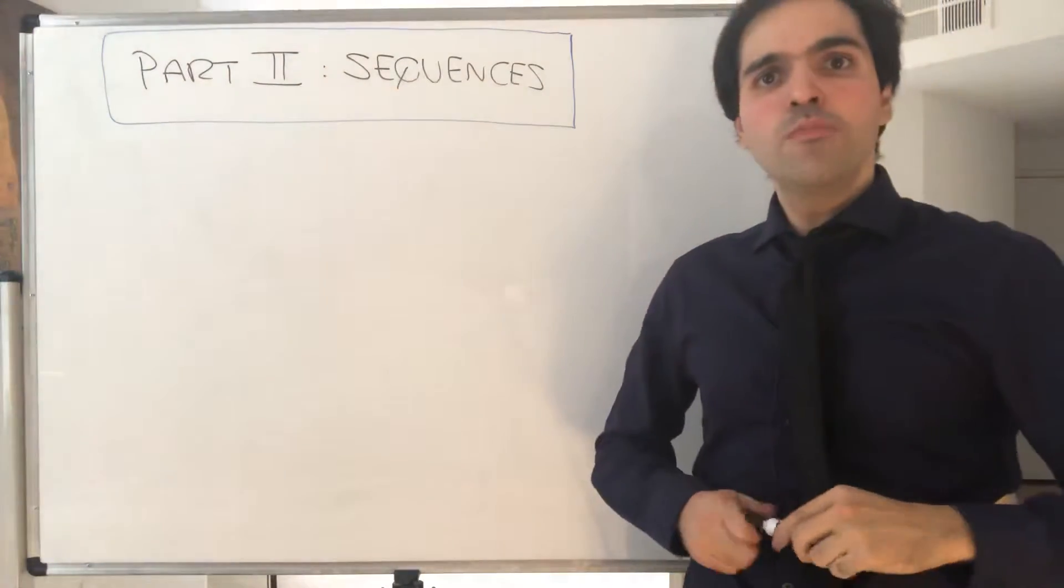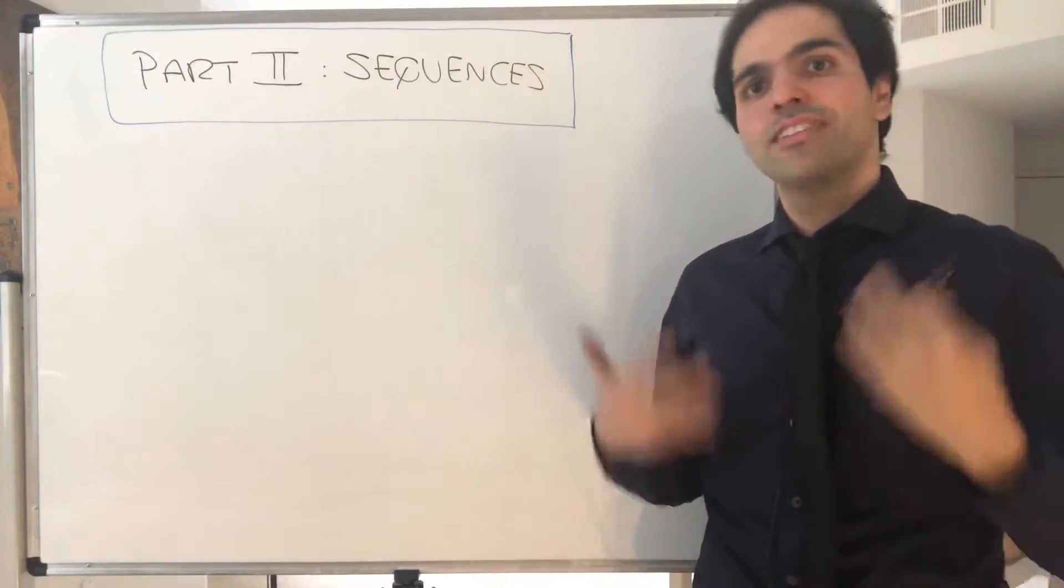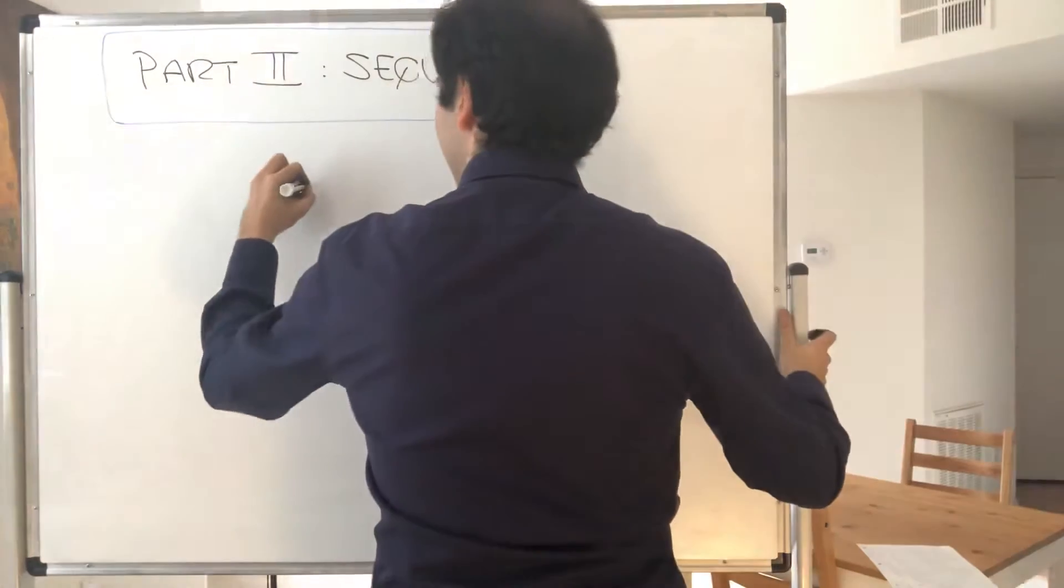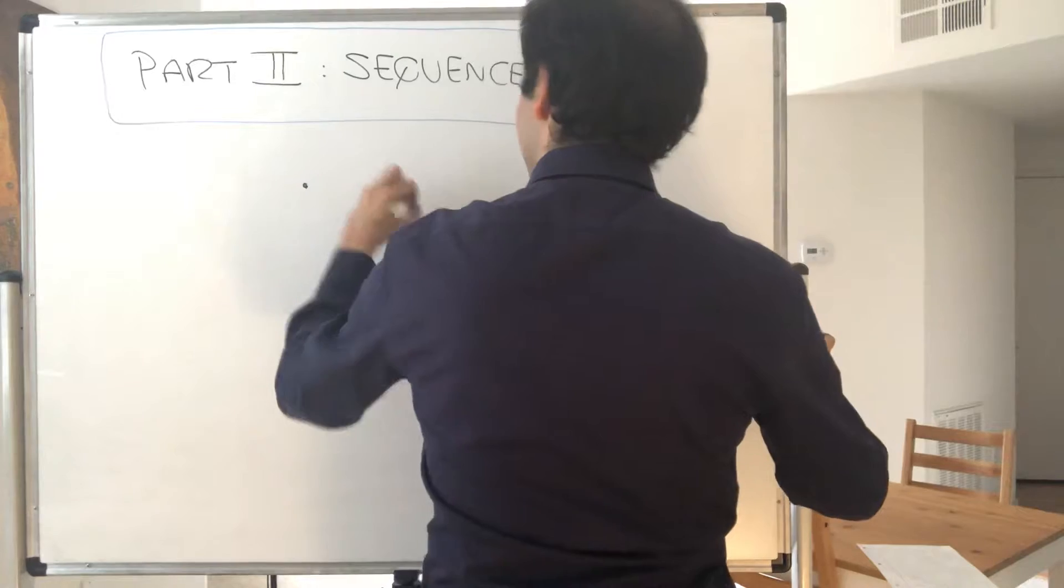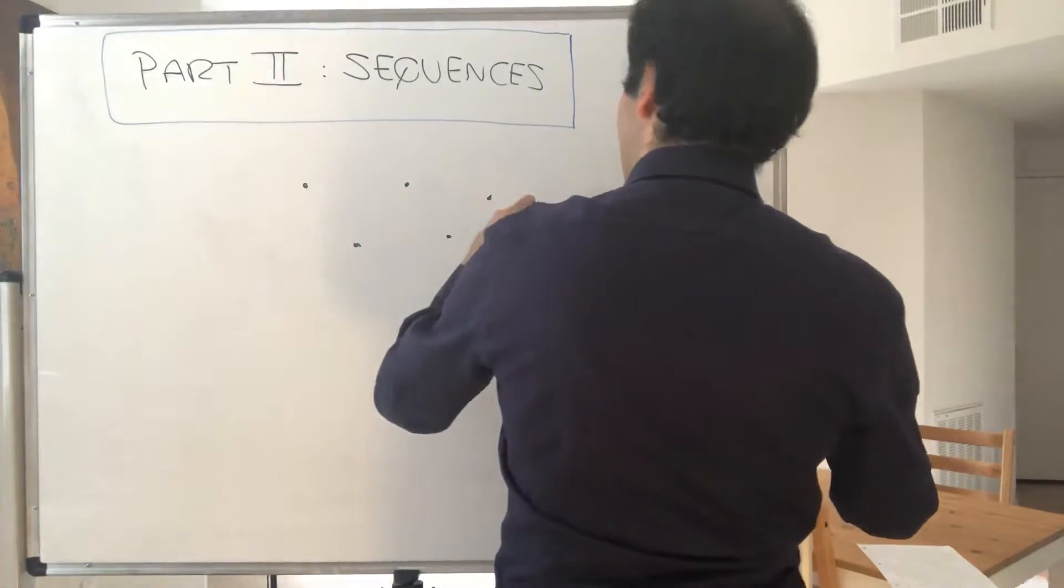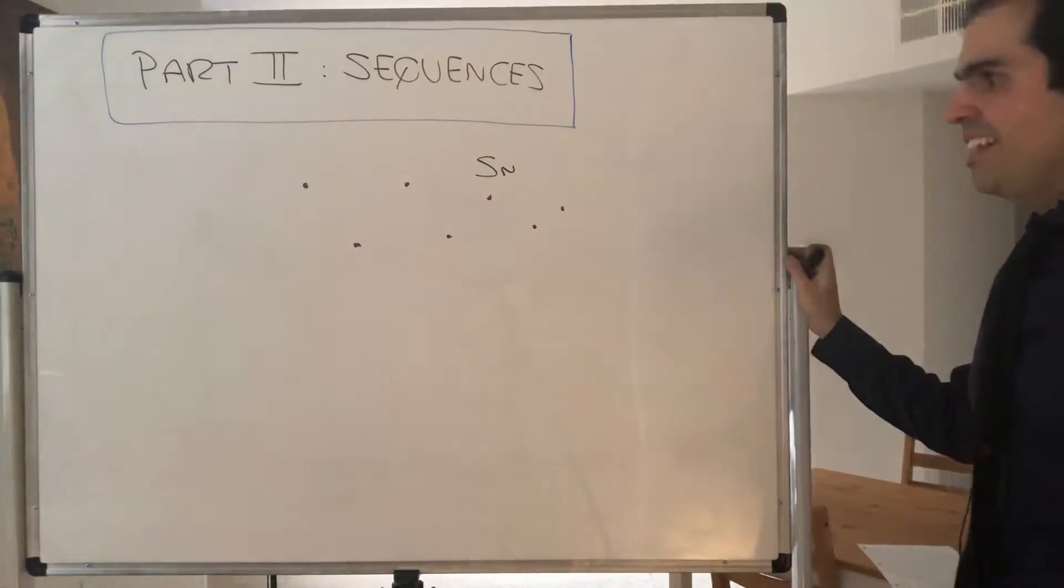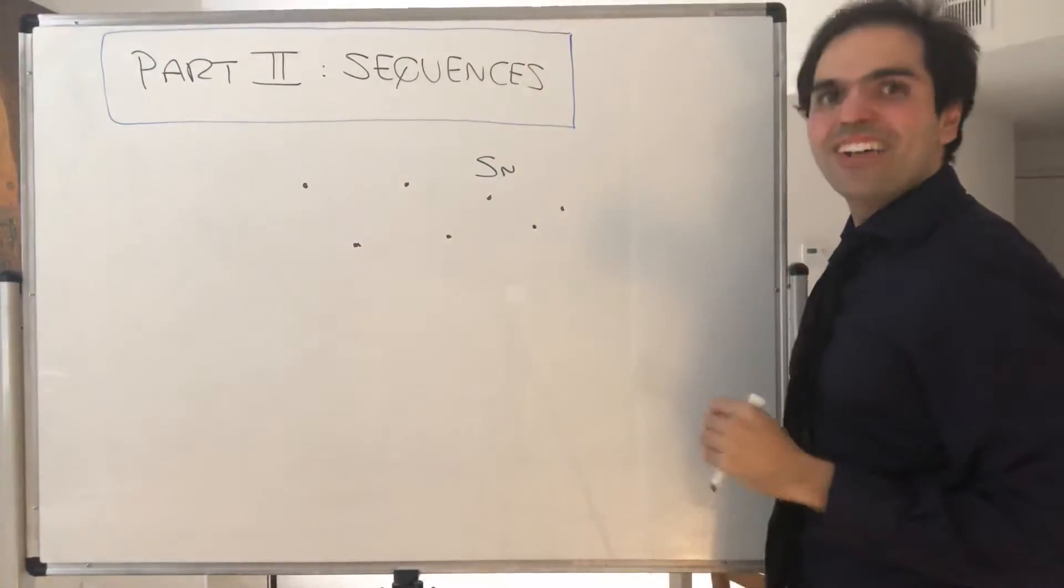Now that we've defined real numbers, we can define sequences, which are infinite lists of real numbers. To visualize them, think of them as dots where for every n you associate a real number Sn. And like Steve Jobs always said, connect the dots.